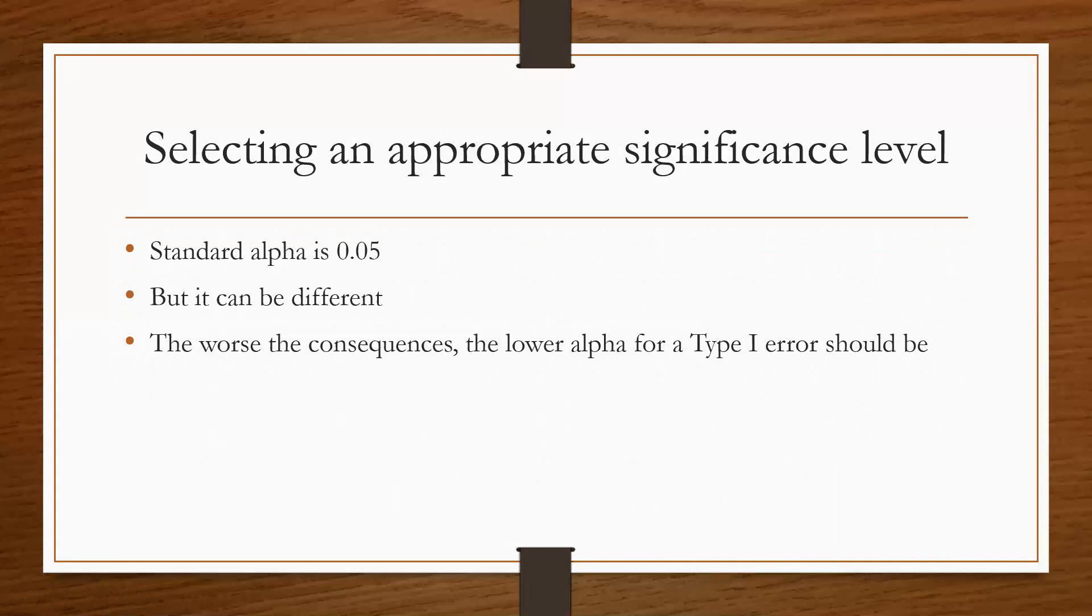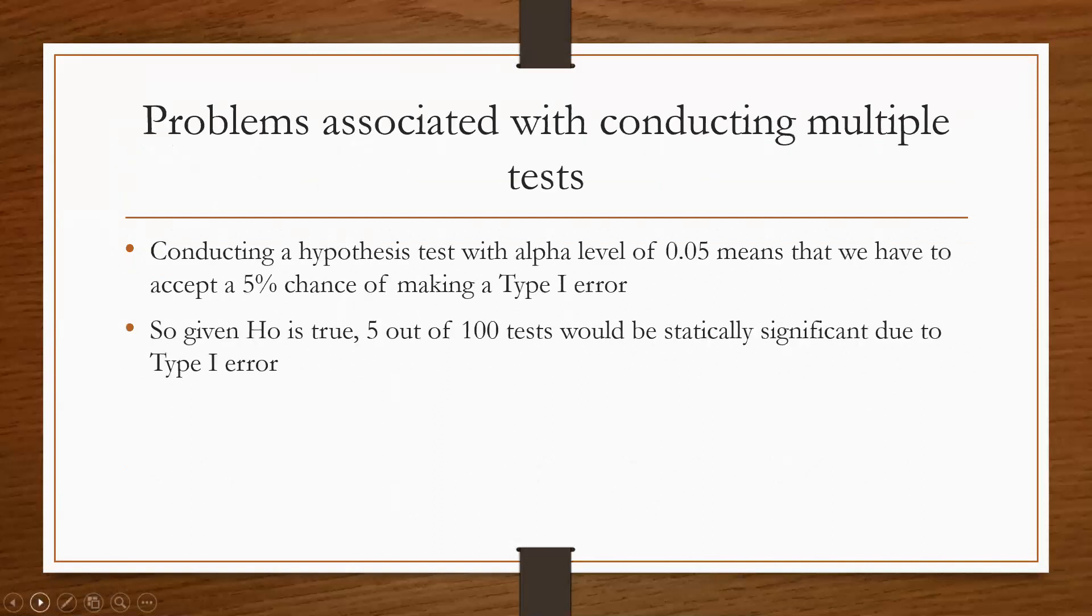Basically, the worse the consequences are for committing an error, the lower the alpha should be. And you know, this is kind of the same for Type I, Type II. If the consequence is really bad, like going back to the court case example, you know, if making an error means that that person is going to go to jail, you'd want the alpha to be really, really low because you don't want to send a person to jail by accident. But you know, I'm not going to say like you should ever be like, oh yeah, this thing doesn't matter so we'll have a really high alpha value. But I'm just saying the worse the consequences, the lower the alpha should be.